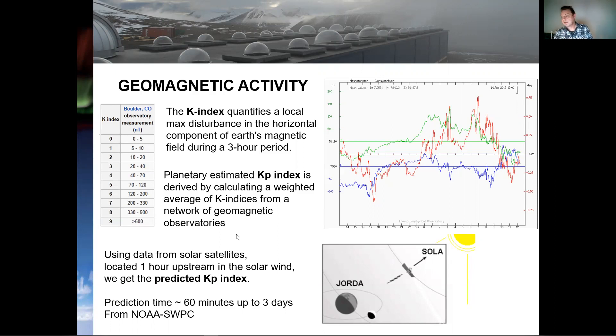Now, if we calculate the weighted average of K indices from a network of geomagnetic activities, we can define the Kp index or the global Kp index, the planetary Kp index. And it tells you how disturbed is the global magnetic field. And furthermore, if we use satellite data from satellites that are located one hour upstream in the solar wind, we can also get the predicted Kp index. And that is what the NOAA Space Weather Prediction Center gives us. Prediction times are up from one hour up to three days.